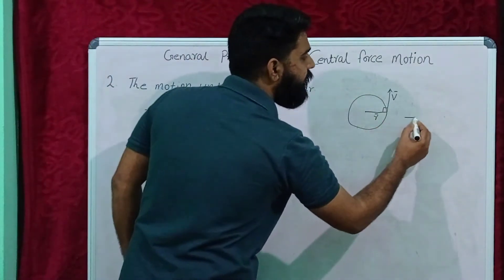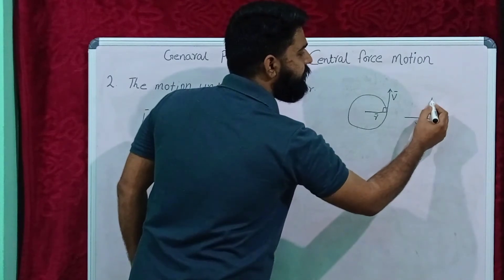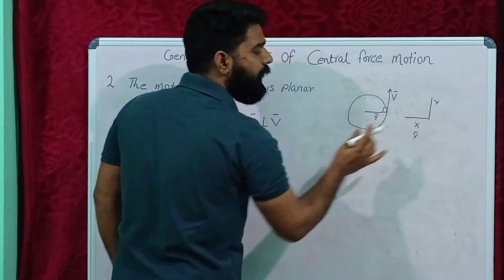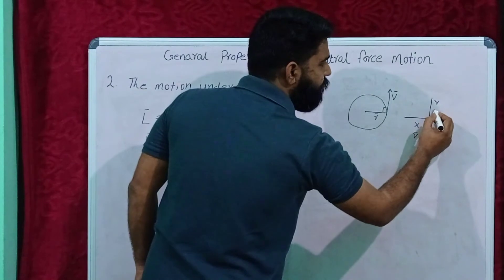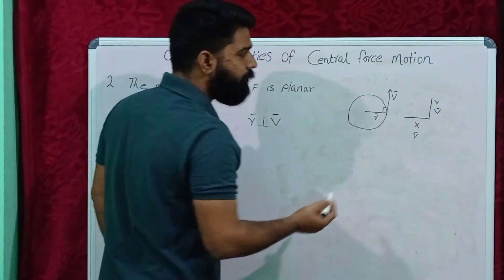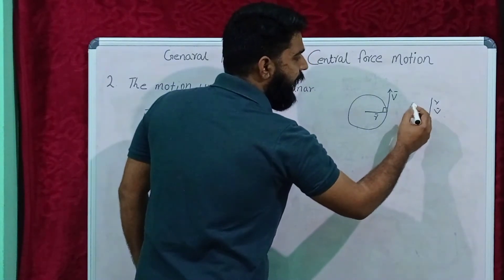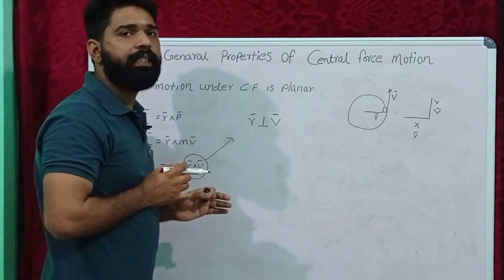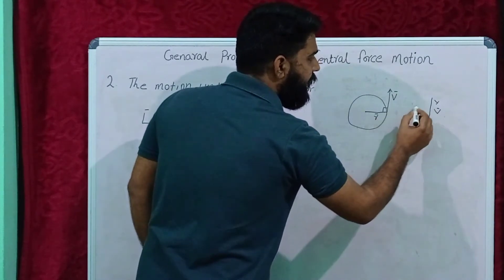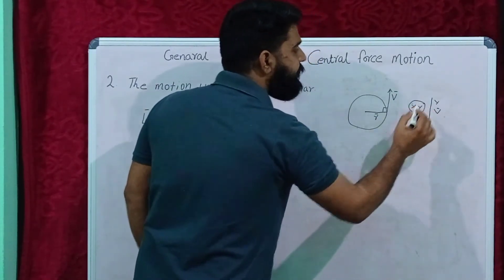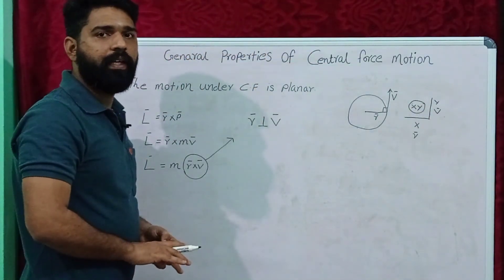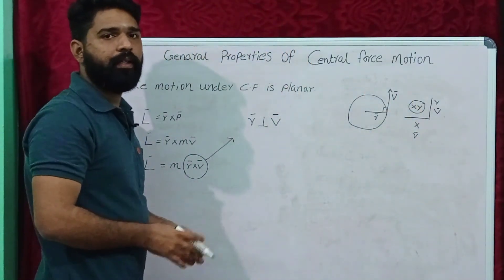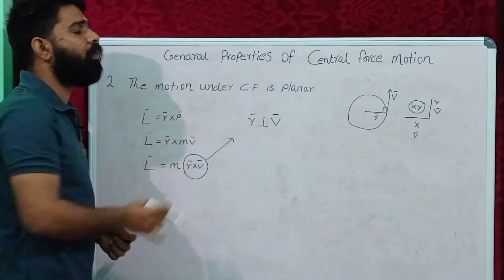Consider: this is the x-axis and this is the y-axis. Then R is lying in the x-plane and V is lying in the y-axis direction. That means the motion under the central force is taking place in the x-y plane — the motion under the central force is planar.